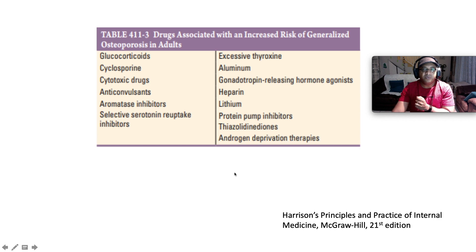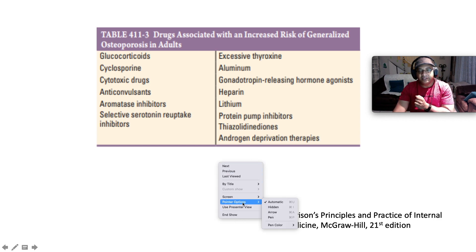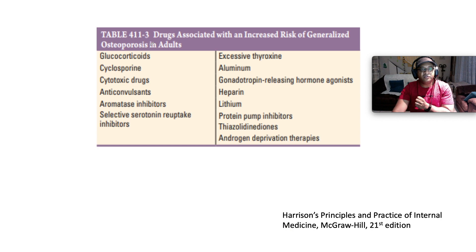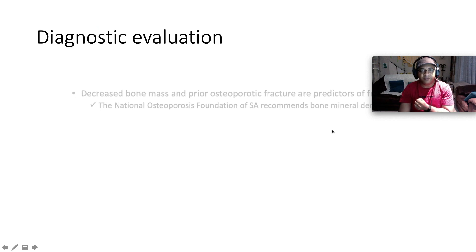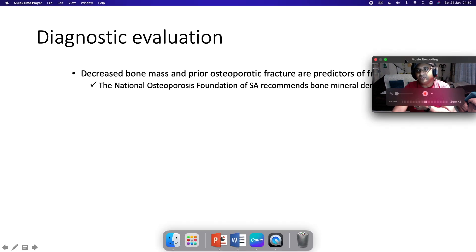Drugs associated with increased risk of generalized osteoporosis in adults include glucocorticoids, cyclosporine, cytotoxic drugs, some anticonvulsants, aromatase inhibitors, SSRIs, excessive thyroxine in hypothyroidism, aluminum-containing antacids, gonadotropin-releasing hormone agonists, heparin, lithium, PPIs, thiazolidinediones, and androgen deprivation therapies.